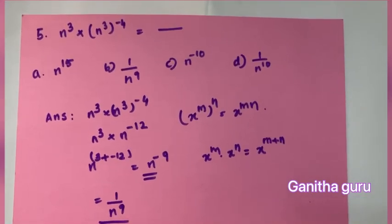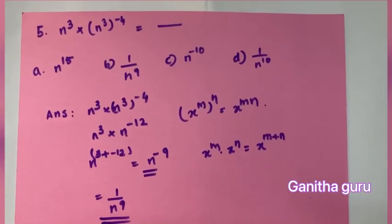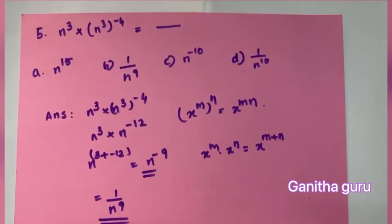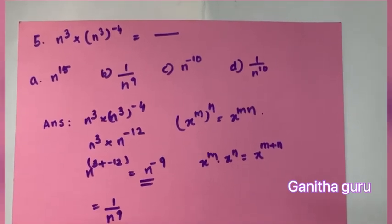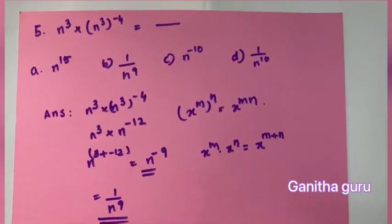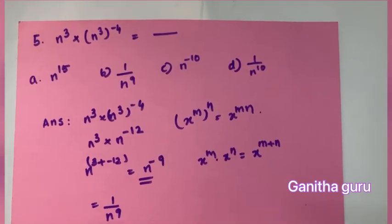Last question: n raised to 3 into n raised to 3, whole raised to minus 4, is equal to what?